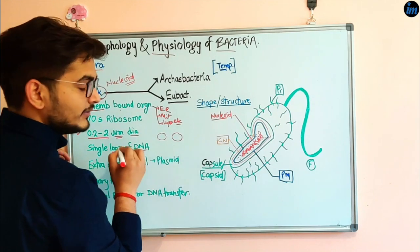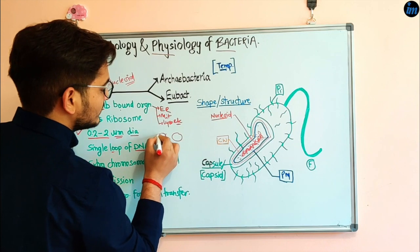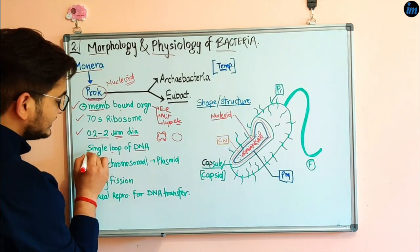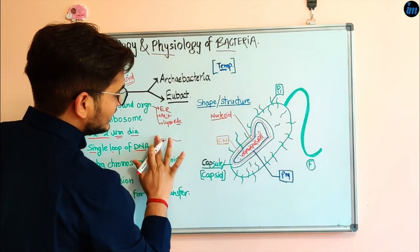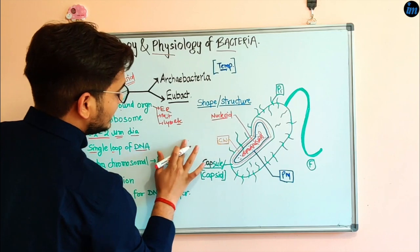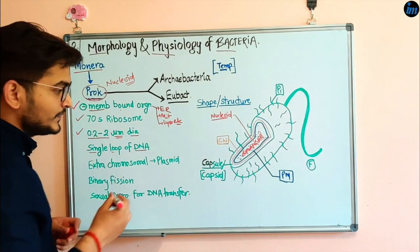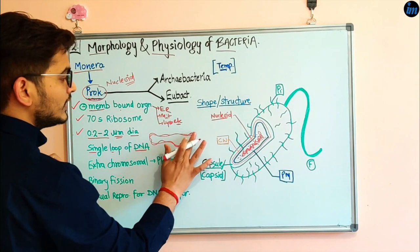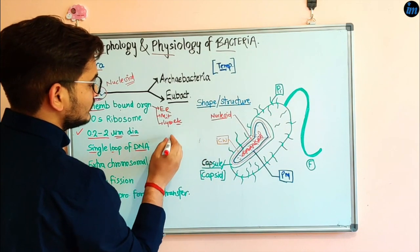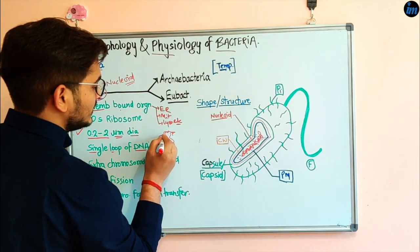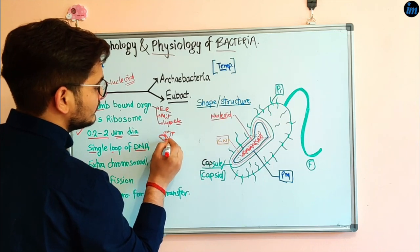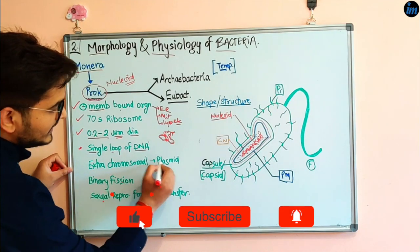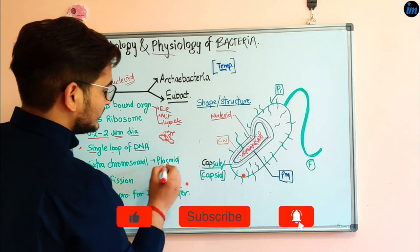Single loop means there is no definite start or end point. It may be in a circular form or in a cluster form, but always in a loop. There is also extra-chromosomal material present in prokaryotes, which is known as the plasmid.